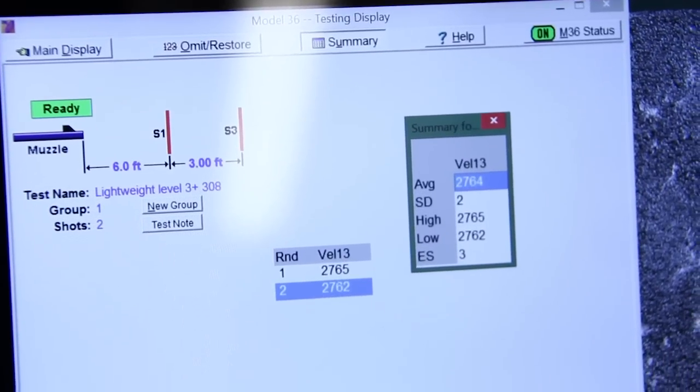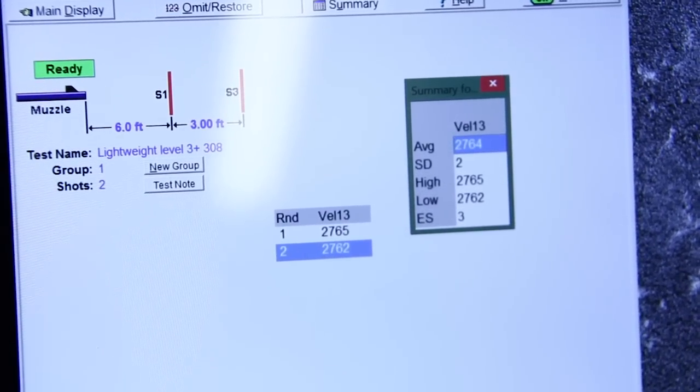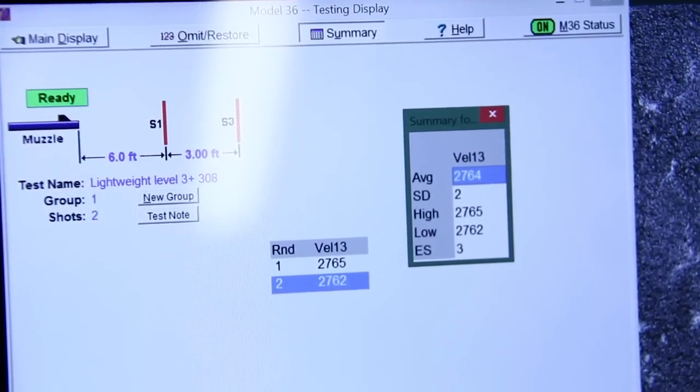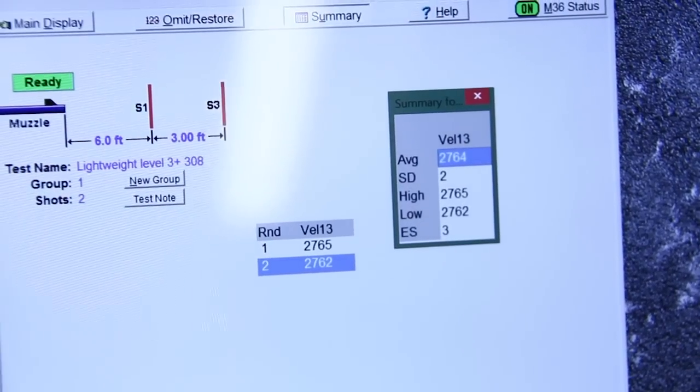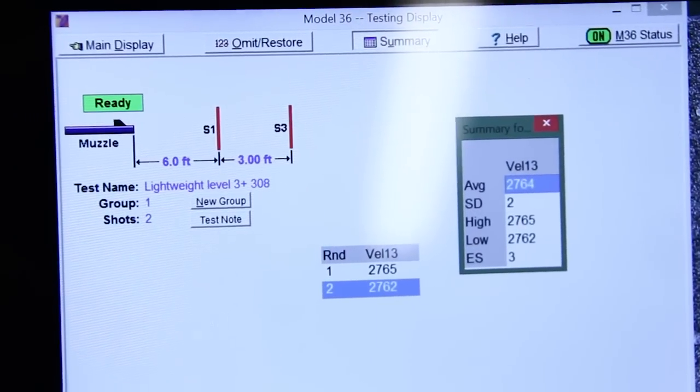Looks like once again I shot a little too fast for the chronograph. We did have four rounds impact. The two rounds that did register had an average velocity of 2,768 feet per second out of the Kel-Tec RFP.